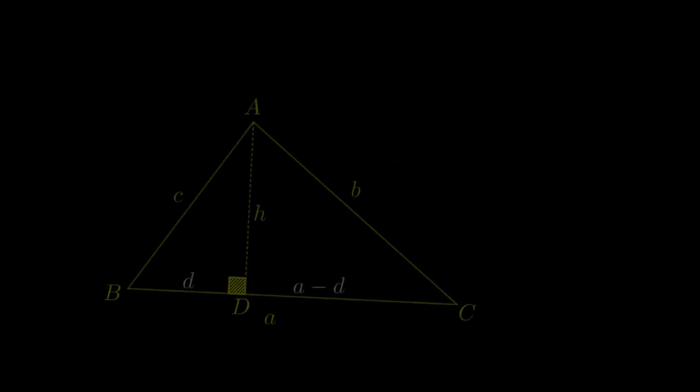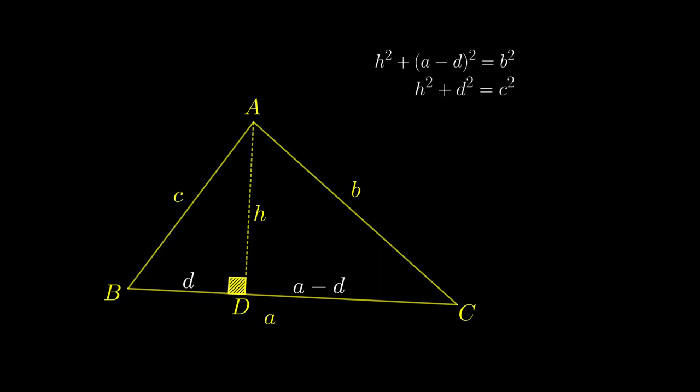Consider this triangle, where we split the segment of length a into two parts by the height. Based on Pythagoras' theorem, we have these two relations. Subtract the second equation from the first, we have this equation, which can be rearranged as follows.